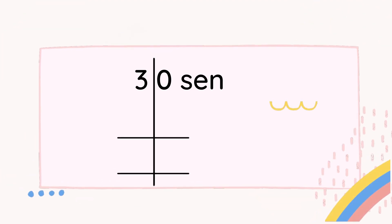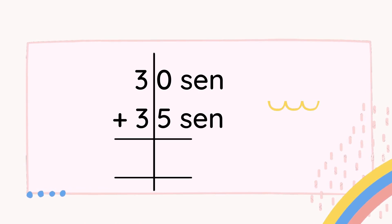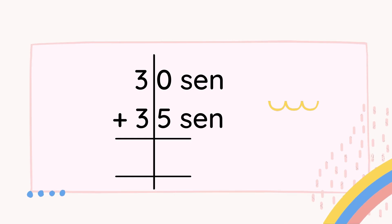To do addition, you must use vertical form. We write 30 cents on the top and 35 cents at the bottom, and we draw the lines. The vertical line separates between place value 1s and place value 10s, and we do horizontal lines for the answer section. Always bear in mind: you need to write the number first, then only you draw the lines. Tulis nombor dulu baru buat garisan.